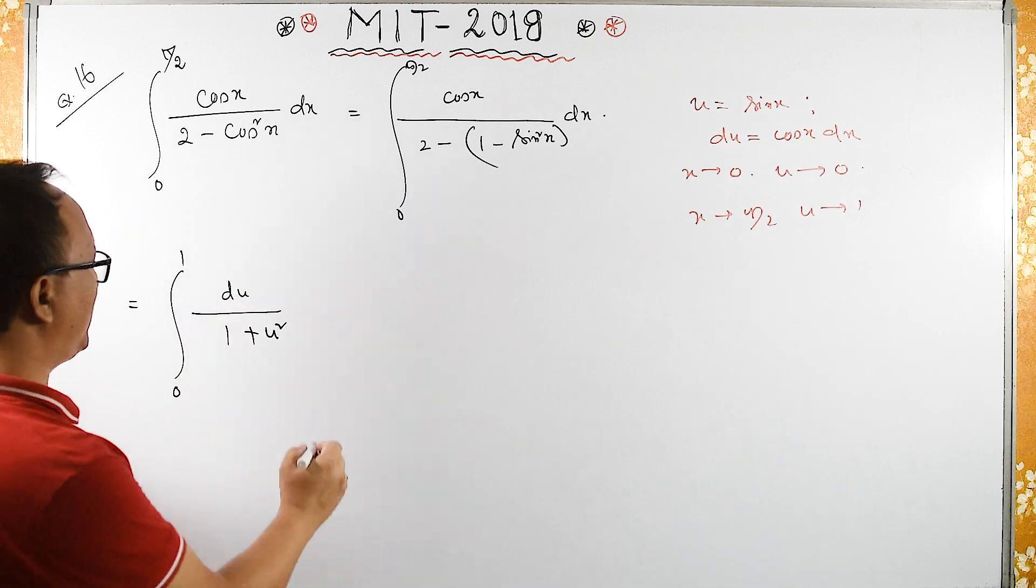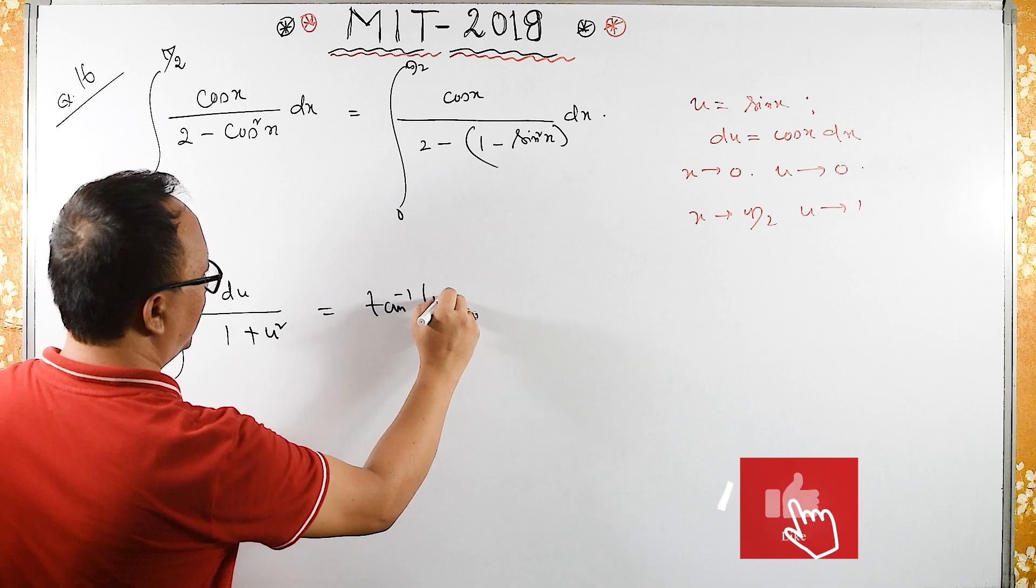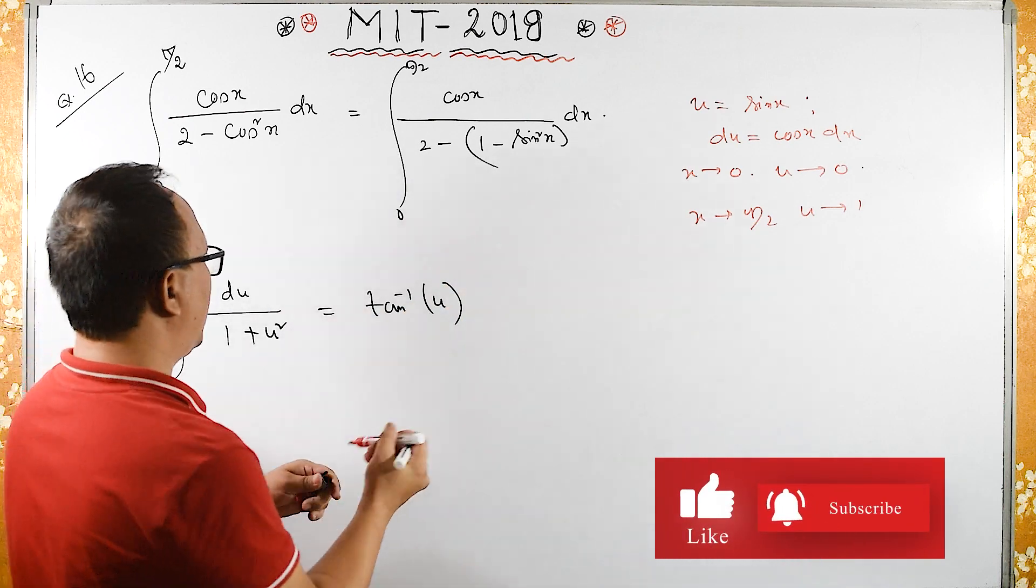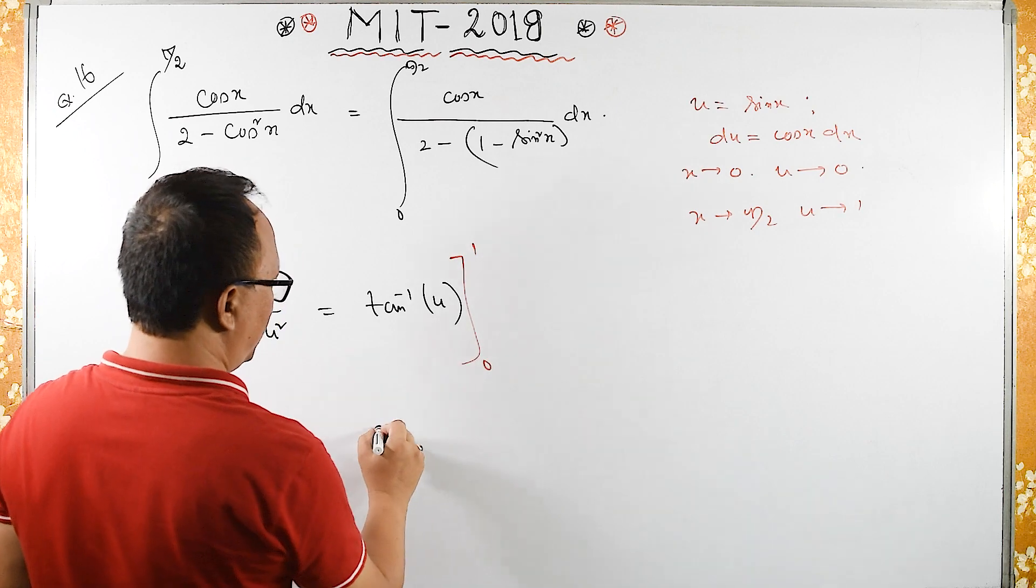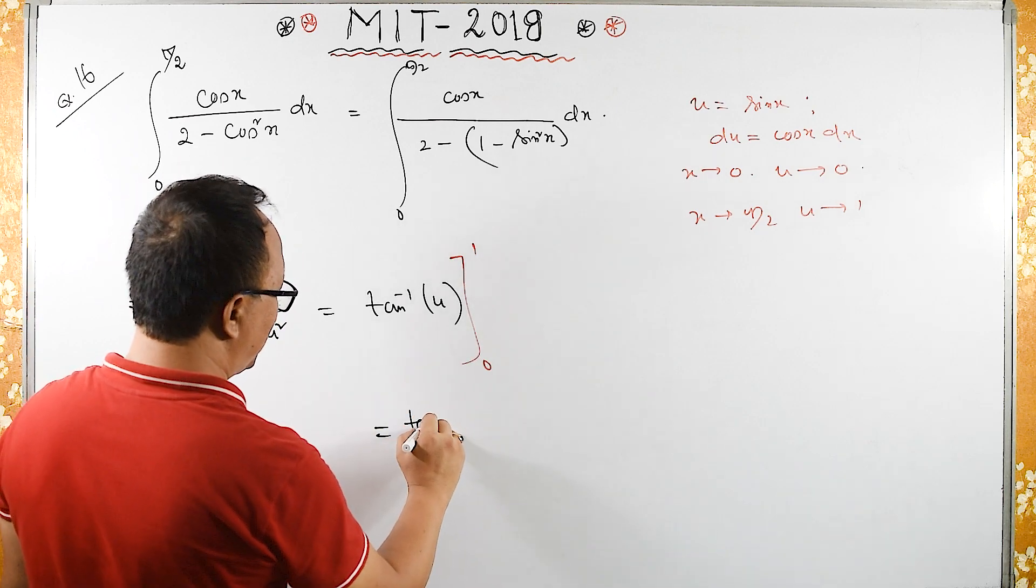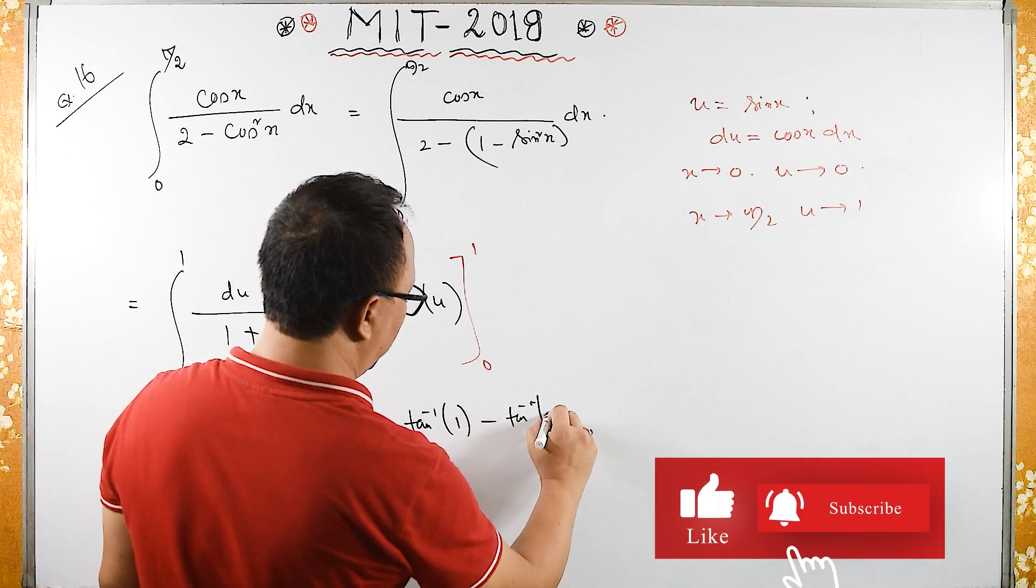1 plus u square, we have this as tan inverse u by formula. And then the limit is from 0 to 1, which equals tan inverse 1 minus tan inverse 0.